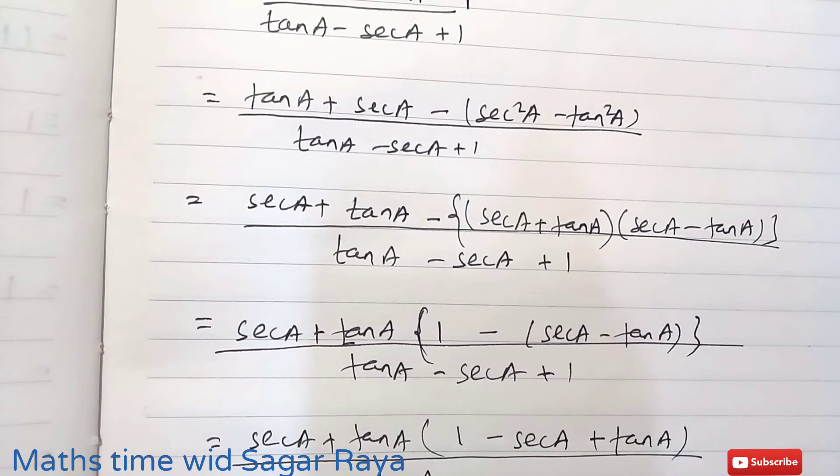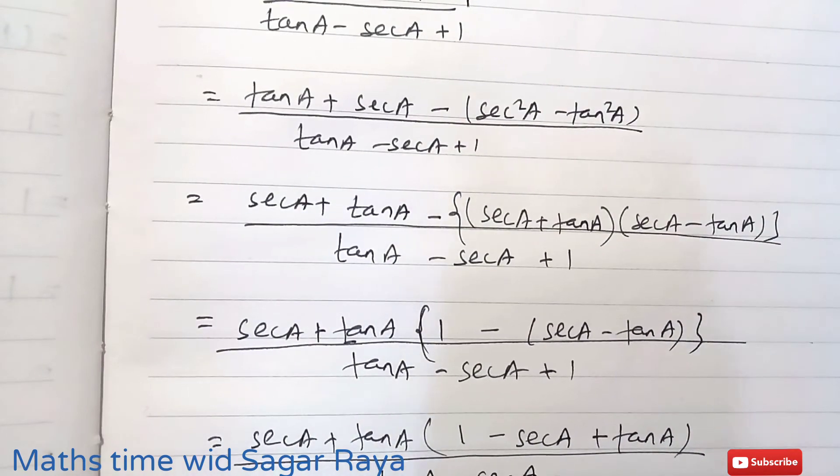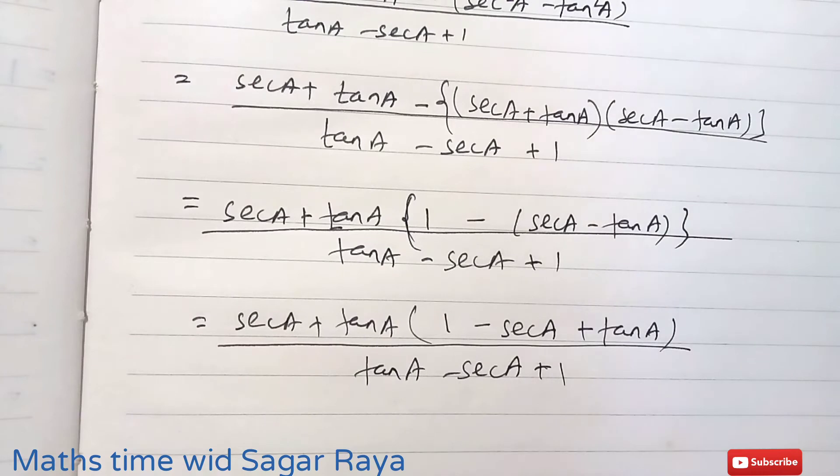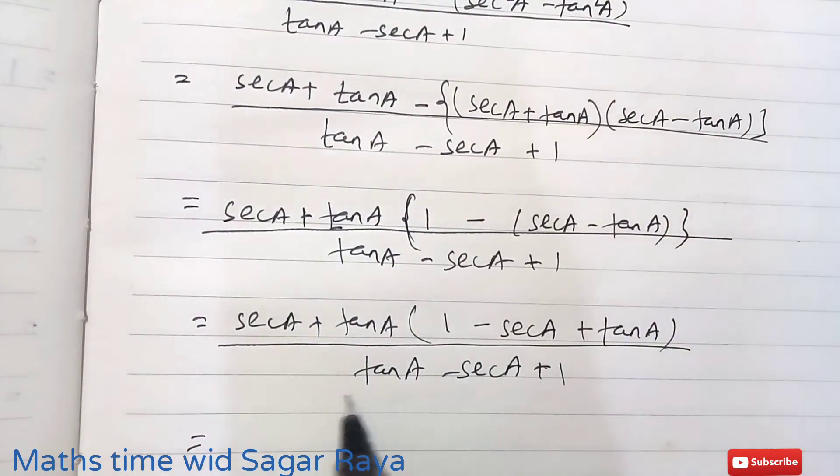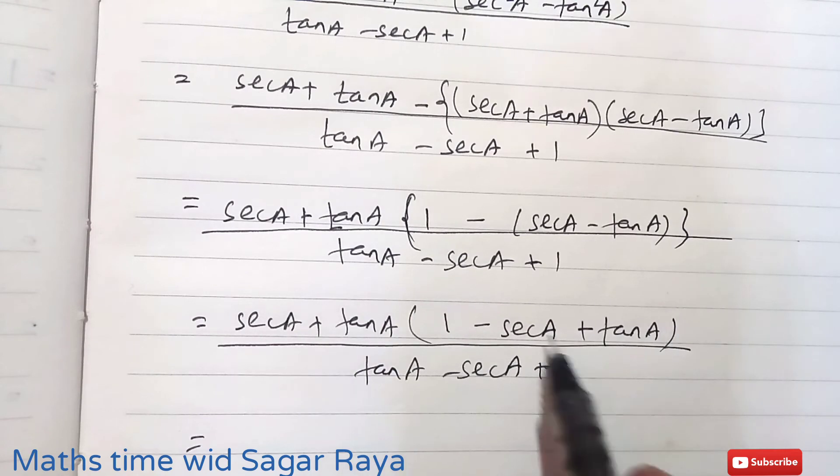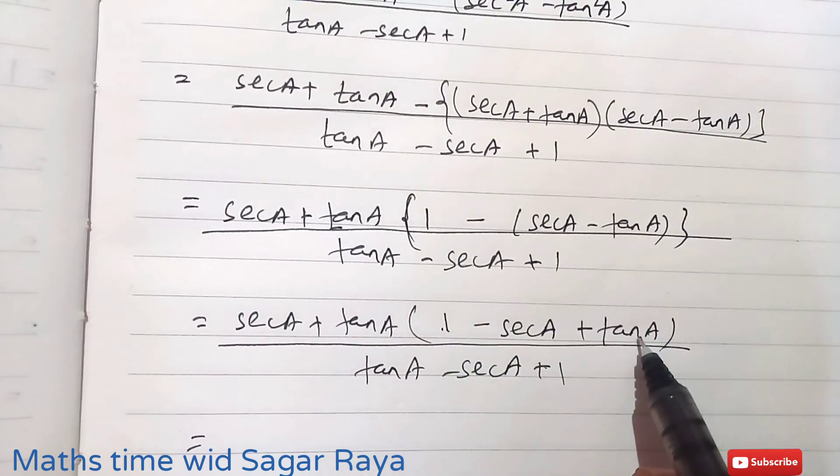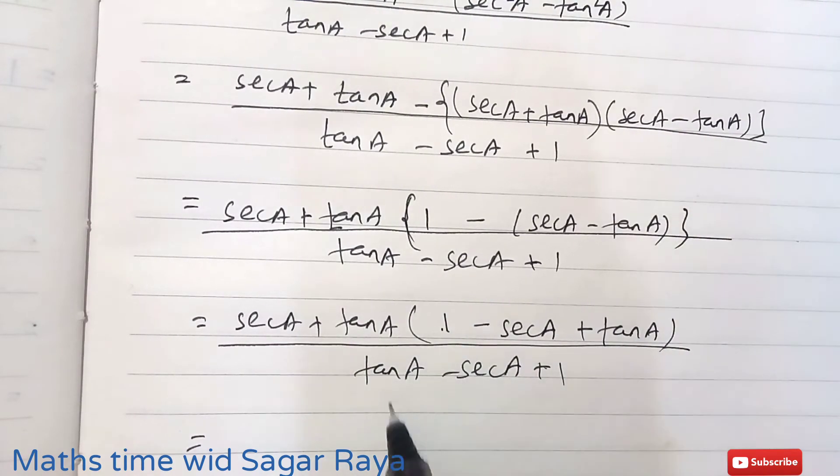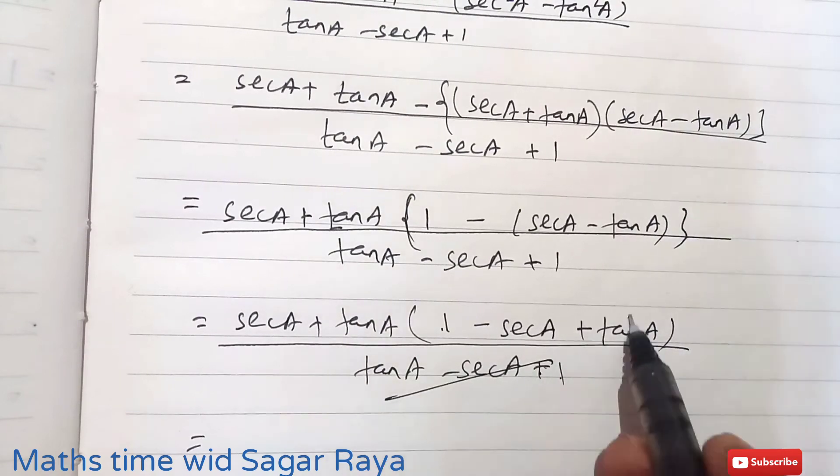So now tanA - secA + 1. If you see this term and this term, it is exactly the same. You can see here 1 and tanA are positive, and here also 1 and tanA are positive, and here -secA, here also -secA. So this and this you may cancel.